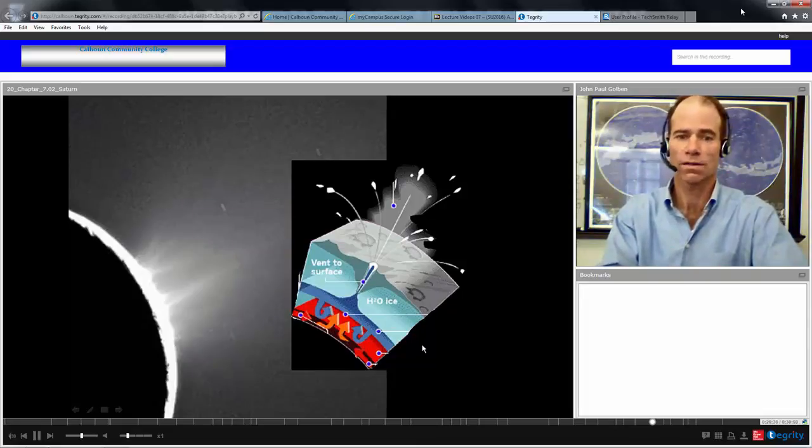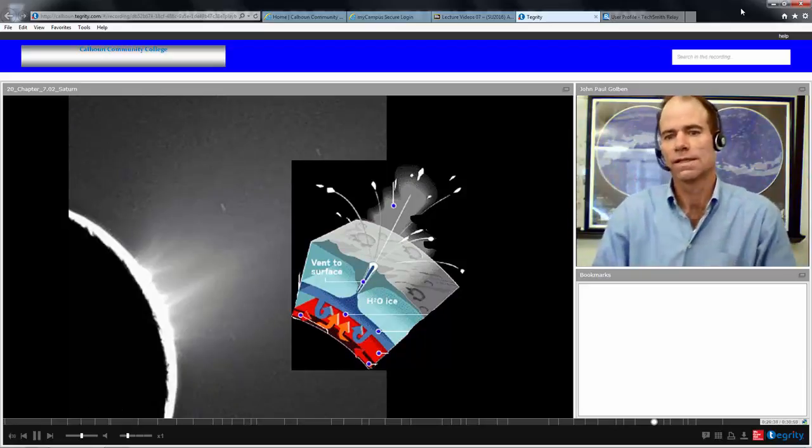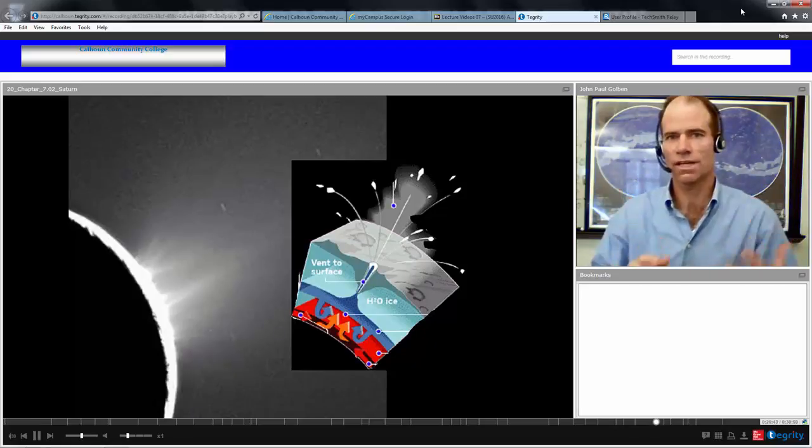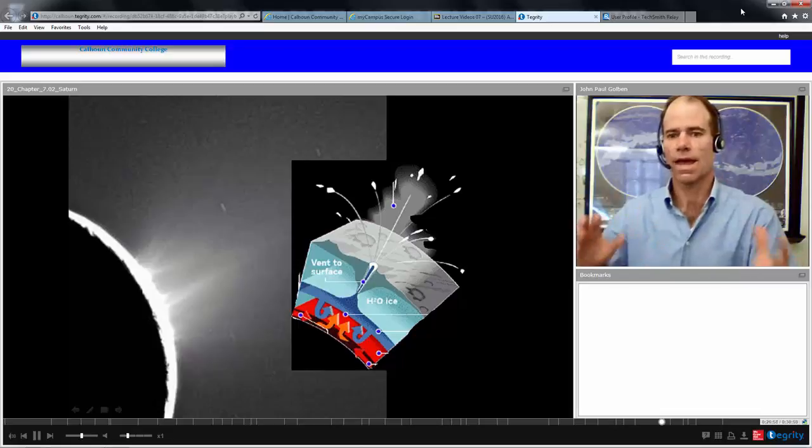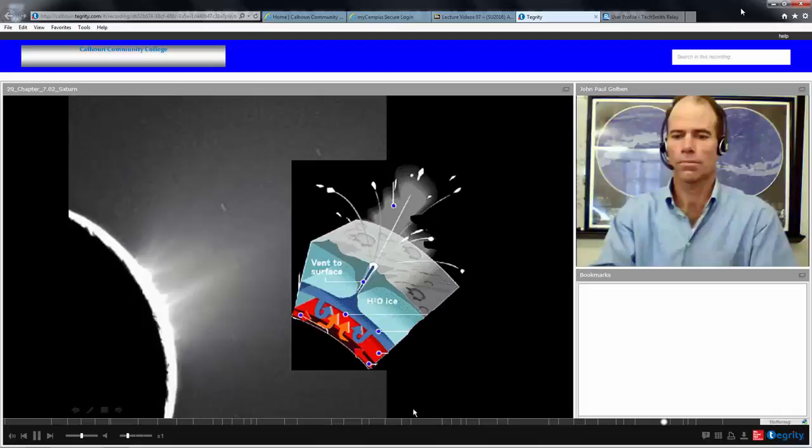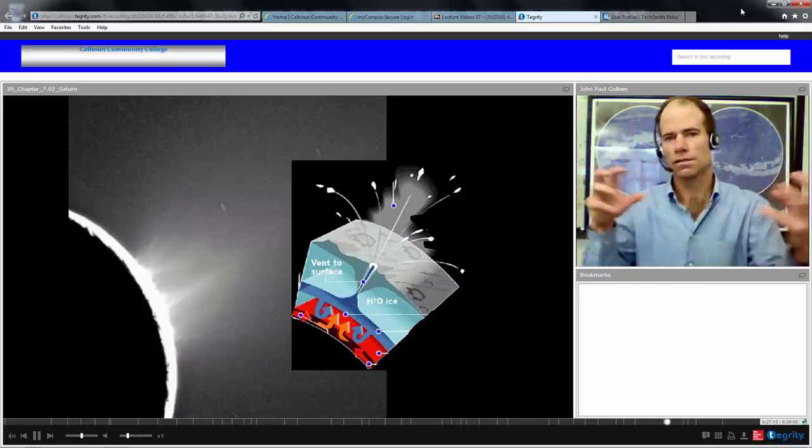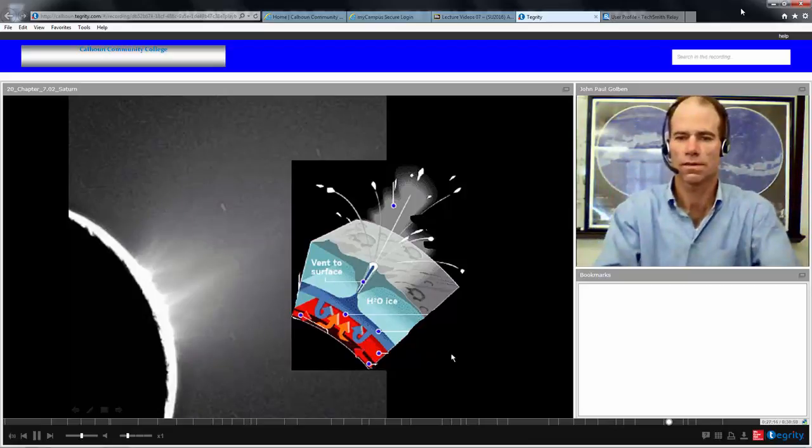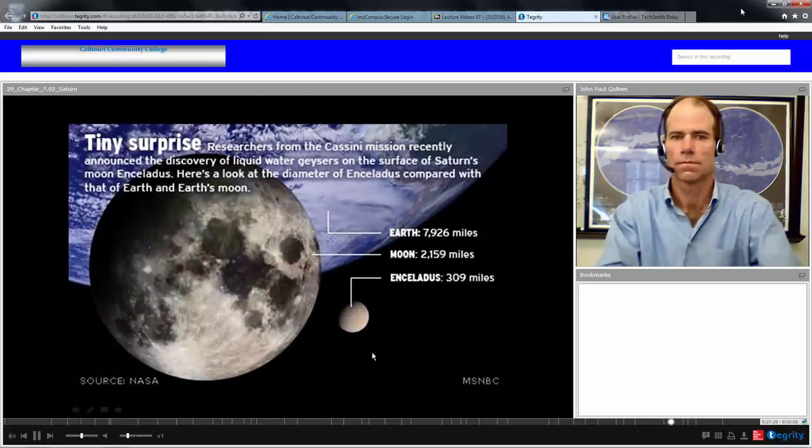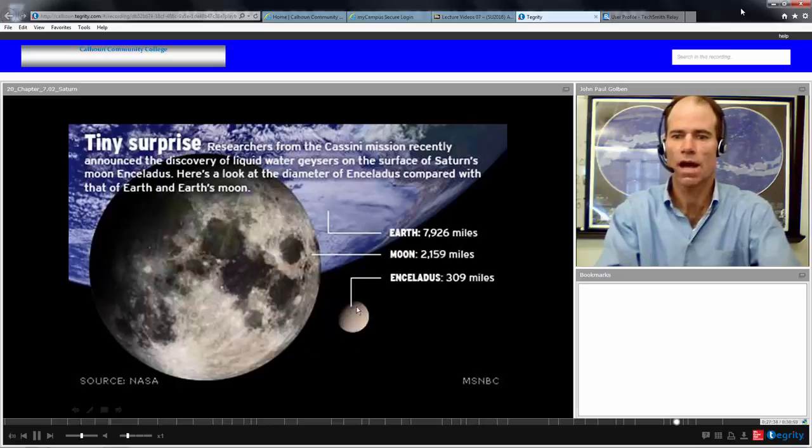Because if there's liquid water on any other terrestrial object, then we always think there's a possibility of life. There must be some kind of internal heat source allowing this to be liquid water. In the case of Enceladus, it's probably the gravitational tidal flexing as it's being pulled by Saturn and the other moons. This pulling between Saturn and the moons are pulling Enceladus back and forth, creating an energy source from its interior. Enceladus has been in the news lately as one of those few worlds that is very interesting, probably even more interesting than Mars itself, as a possible location of life. Certainly liquid water.